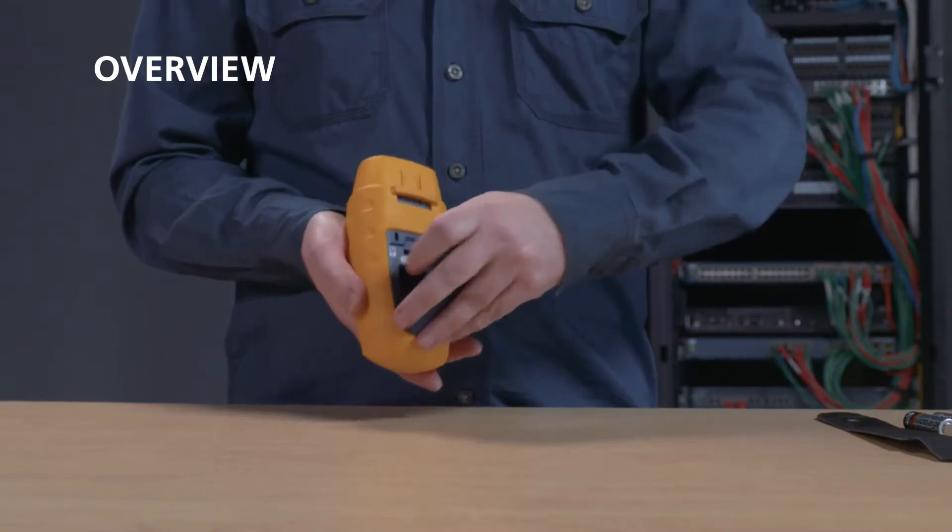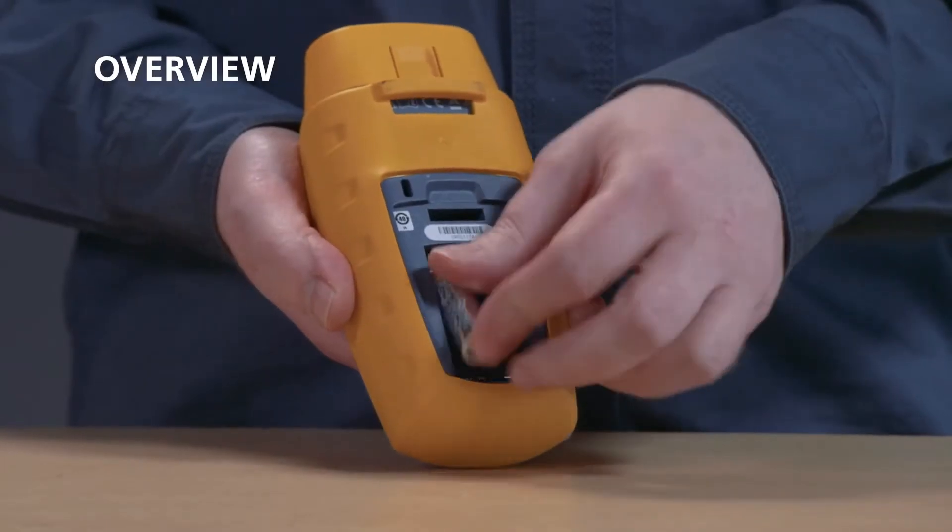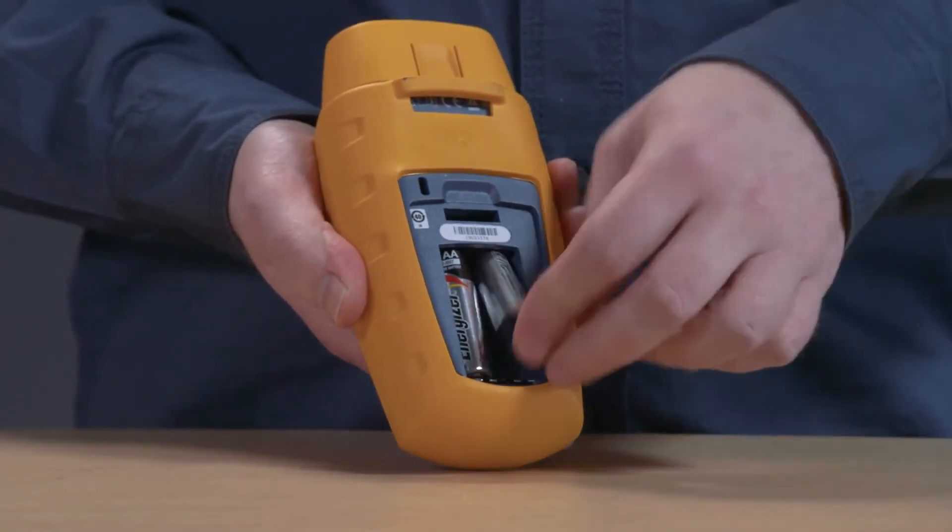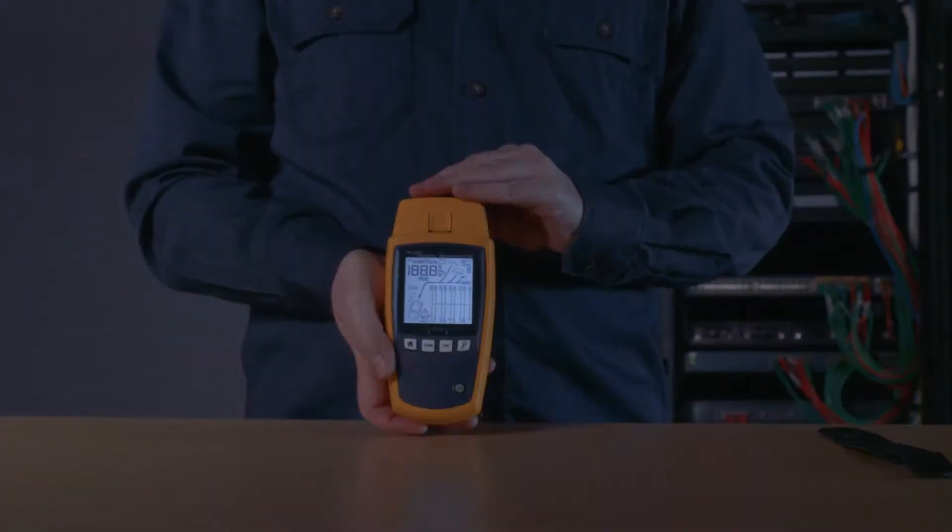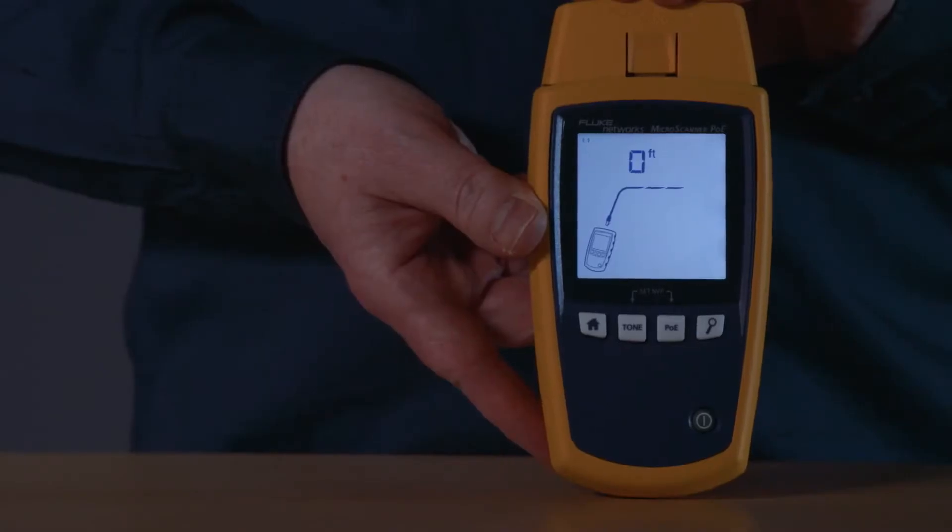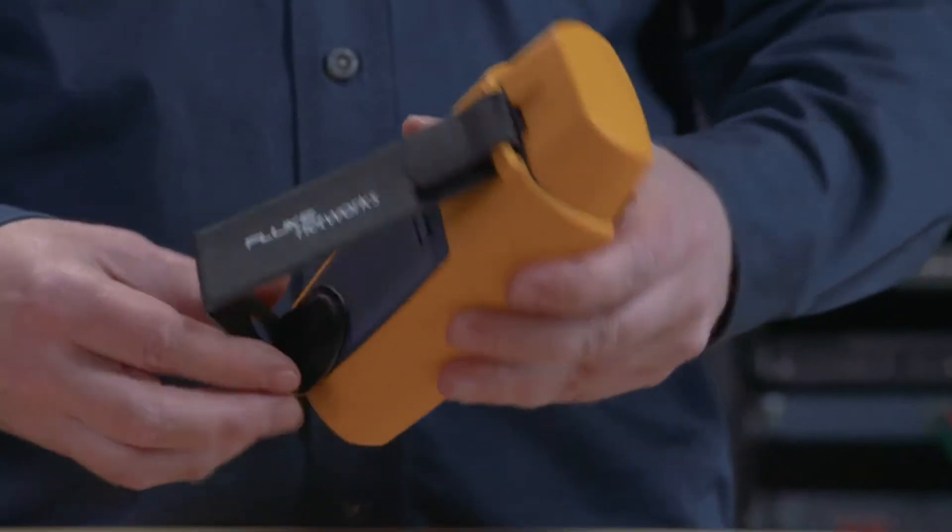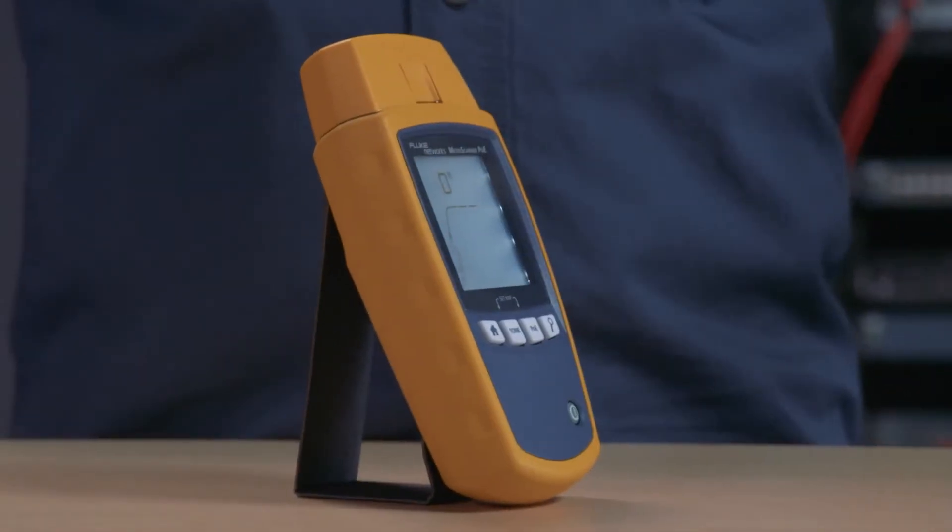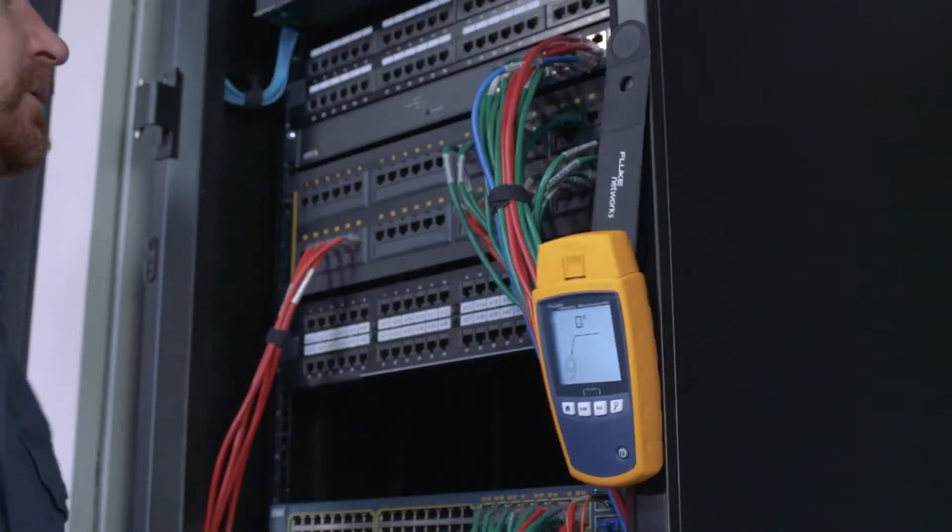The Microscanner PoE runs on two AA batteries installed in the back. It features a large backlit display for easy viewing, and the convenient MagKit MagStrap can be used as a stand or attached to any metal surface.